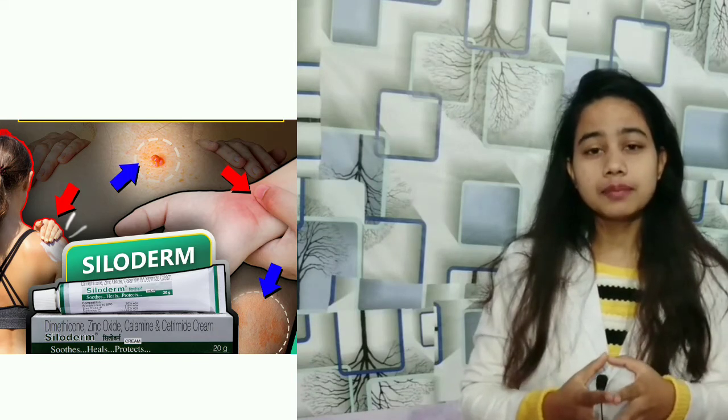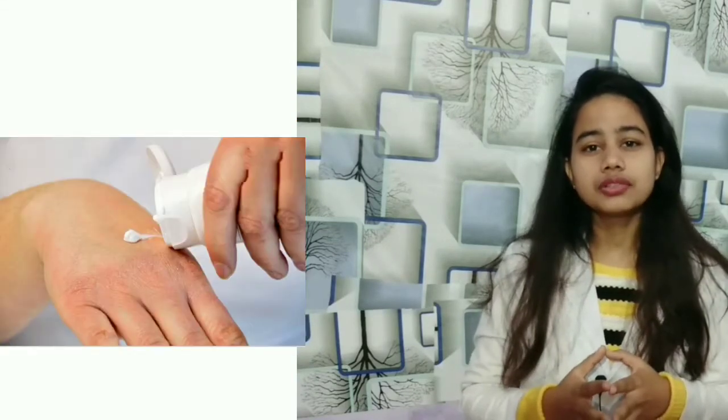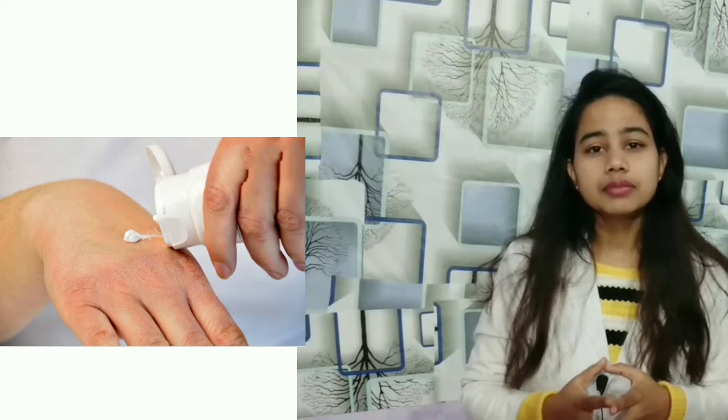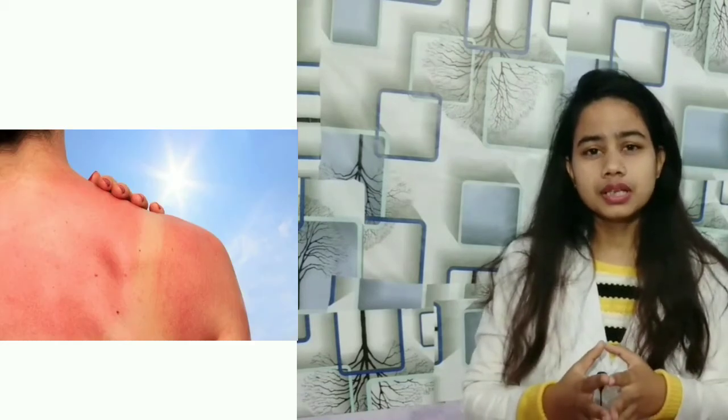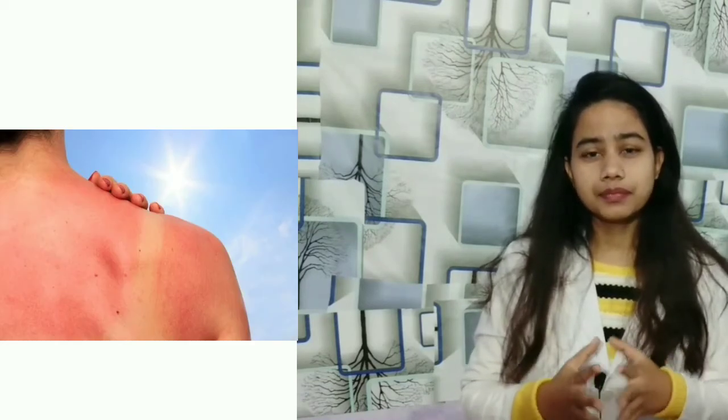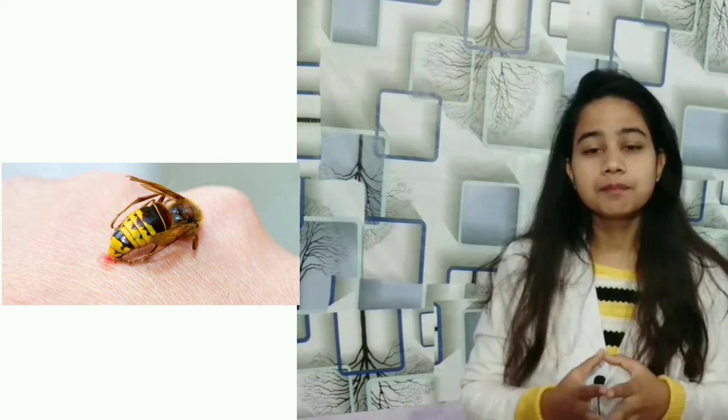Number 8: Dimethicone. Number 9: Calamine. Calamine provides a cooling sensation. It is used as a cream that soothes sunburn and skin irritations. In addition, Calamine has mild astringent properties, meaning it helps stop bleeding.